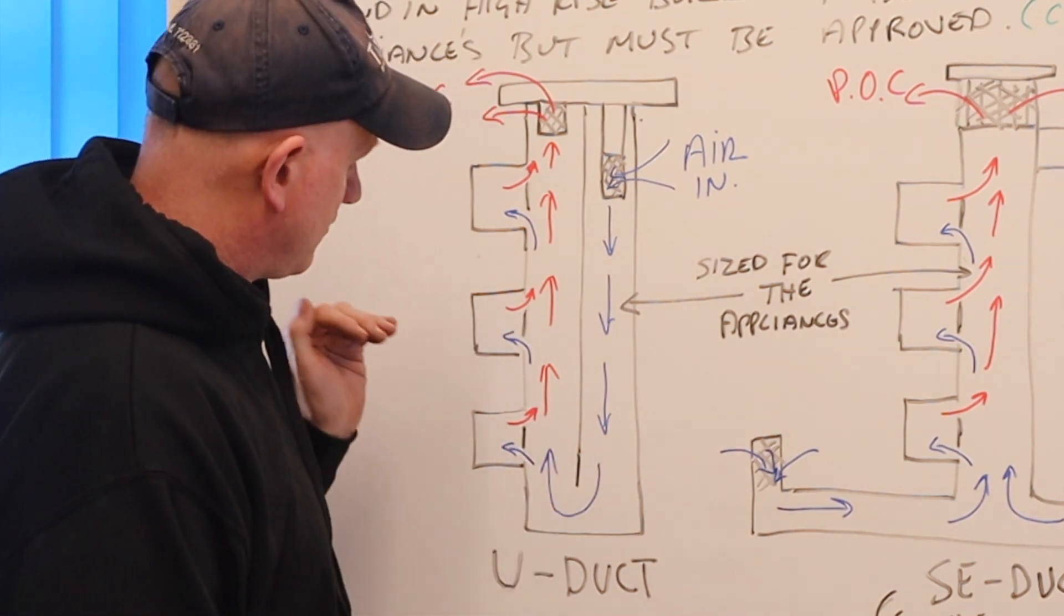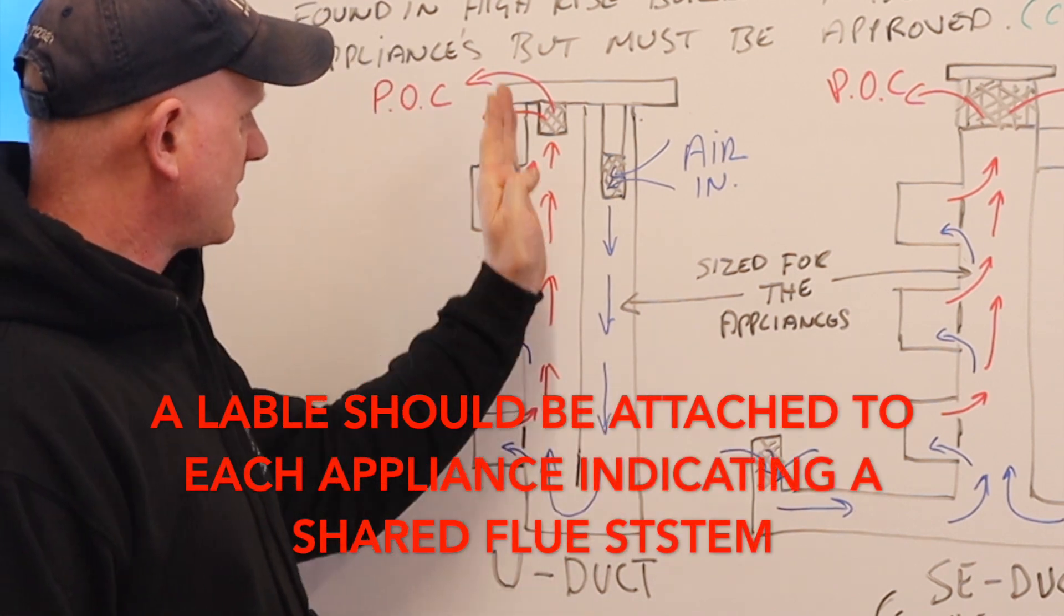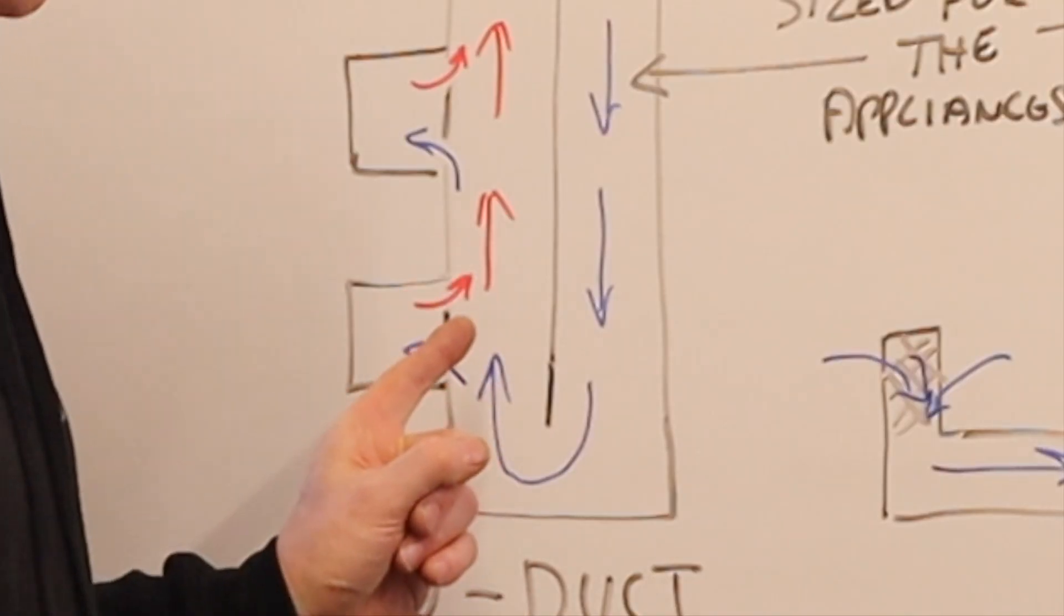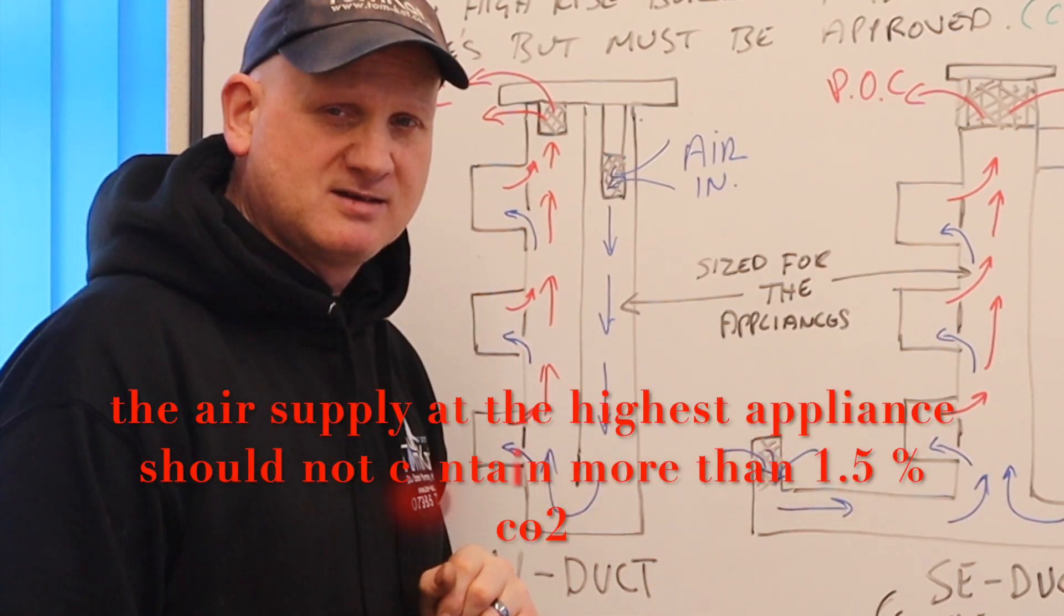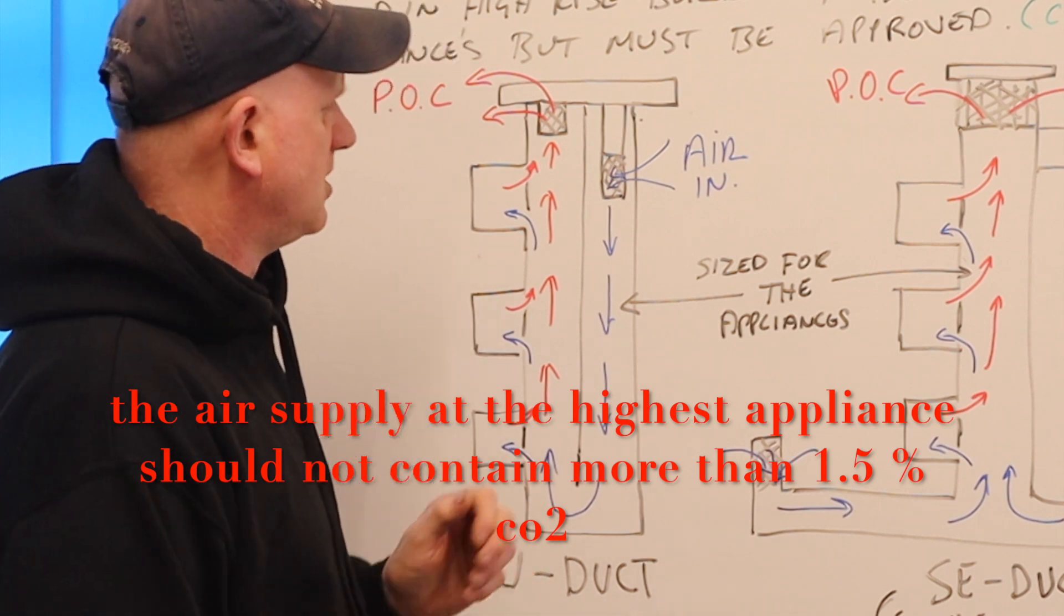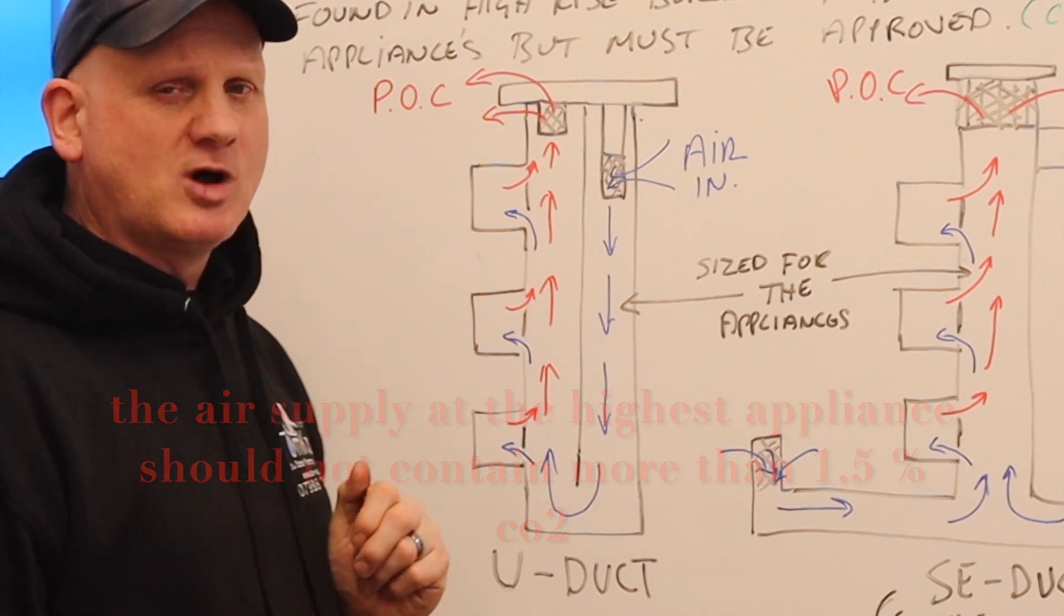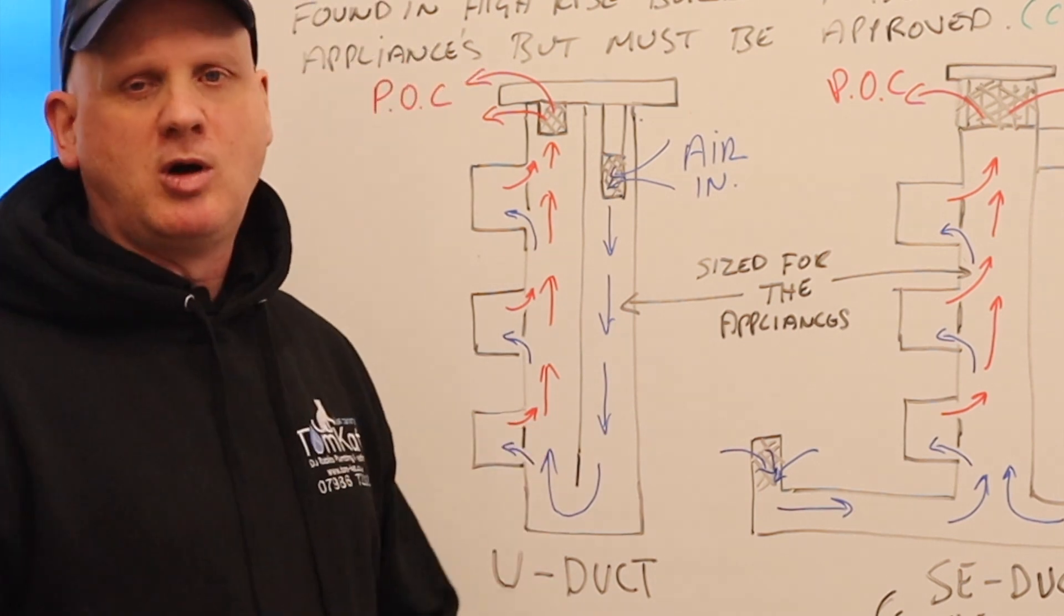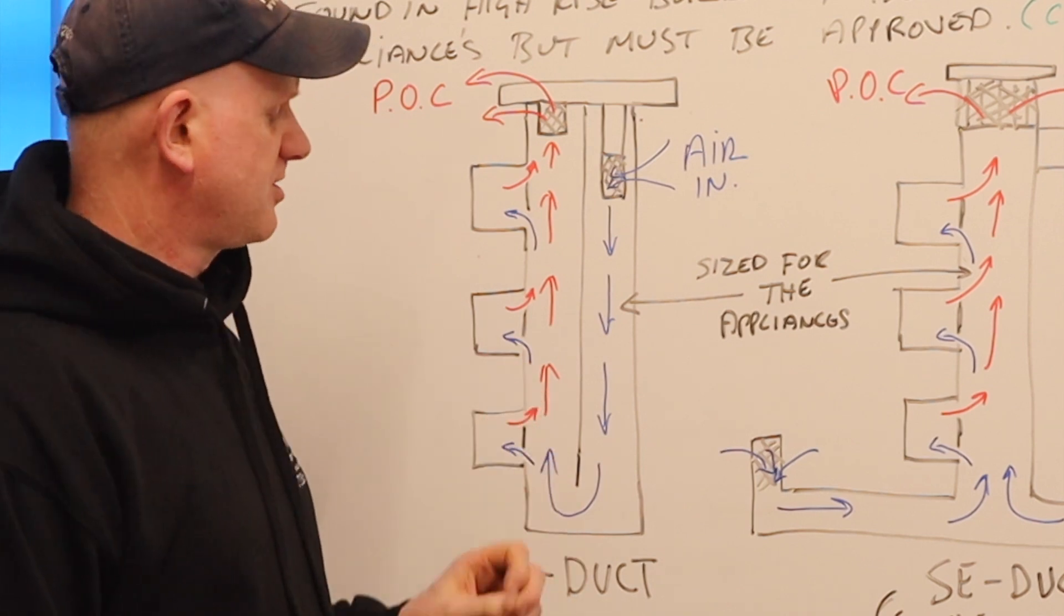The appliances, like I said, would be room sealed appliances and would draw their combustion air from this left-hand side of the shaft. But what's the major problem you see with this? Well, basically this appliance here would get a lot of oxygen, but this appliance here wouldn't be getting a lot of oxygen because it would be drawing in a lot of the products of combustion. But the main thing for these is they are sized for the appliances that are being installed on them. So if these were 10 kilowatt boilers, you couldn't go and put on a 24 kilowatt boiler because it has to be the same kilowatts when you're replacing the appliance.